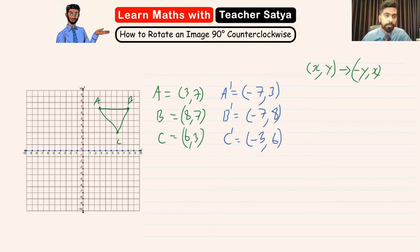Now we are going to take these points and we are going to plot them. So our A prime is negative 7 and 3 which will be right about here. B prime is negative 7 and 8 which will be right about here. And C prime is negative 3 and 6 which will be right about here. And if we join the dots, this is what our image will look like once we do a 90 degree turn counterclockwise.